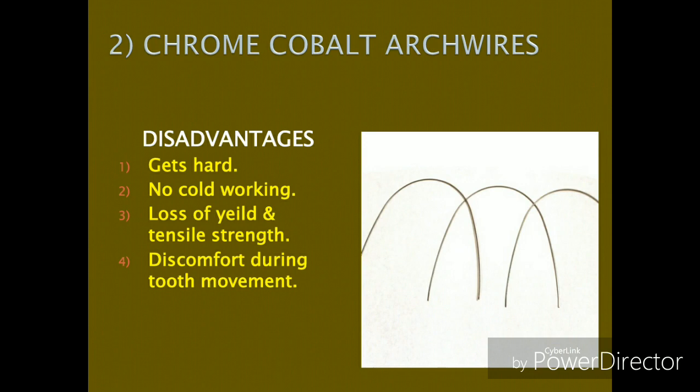Regarding the disadvantages of chrome cobalt arch wires: first, they have a tendency to harden at points where two segments are welded or soldered. Second, they cannot be bent again and again from the same point, as repeated bending causes fracture. It is preferred to use a low-fusing solder, because when heated above 650°C it results in loss of yield and tensile strength. Additionally, these arch wires release high forces during unloading, causing patient discomfort during tooth movement.